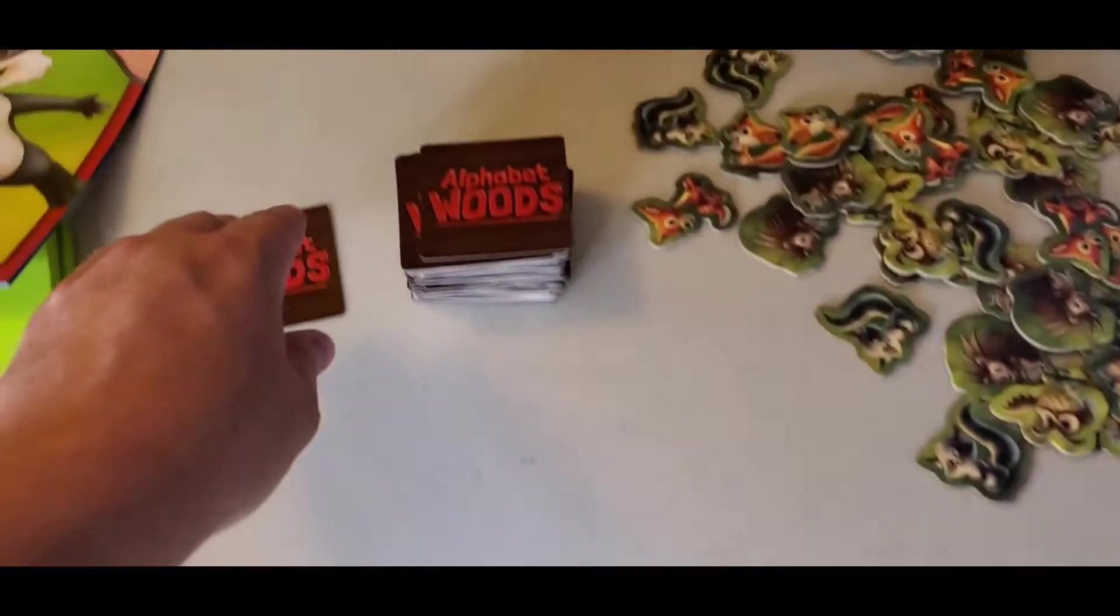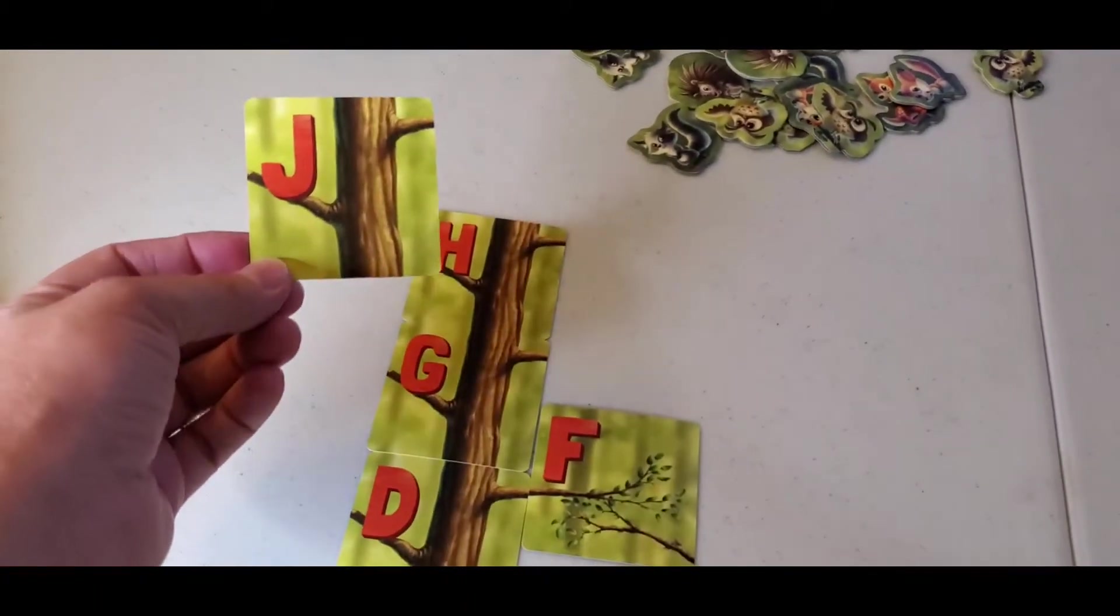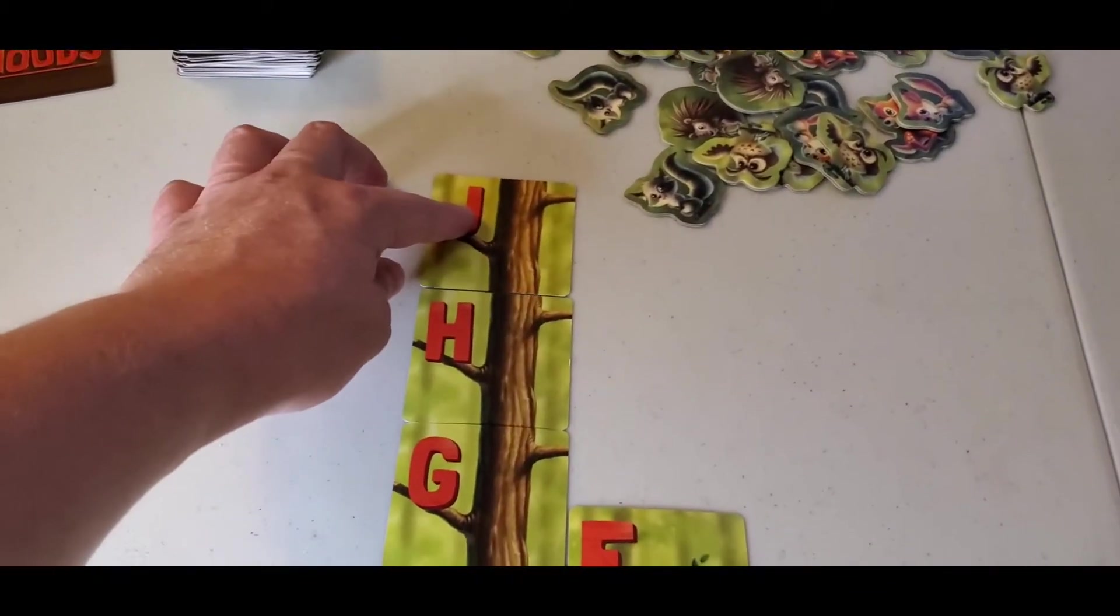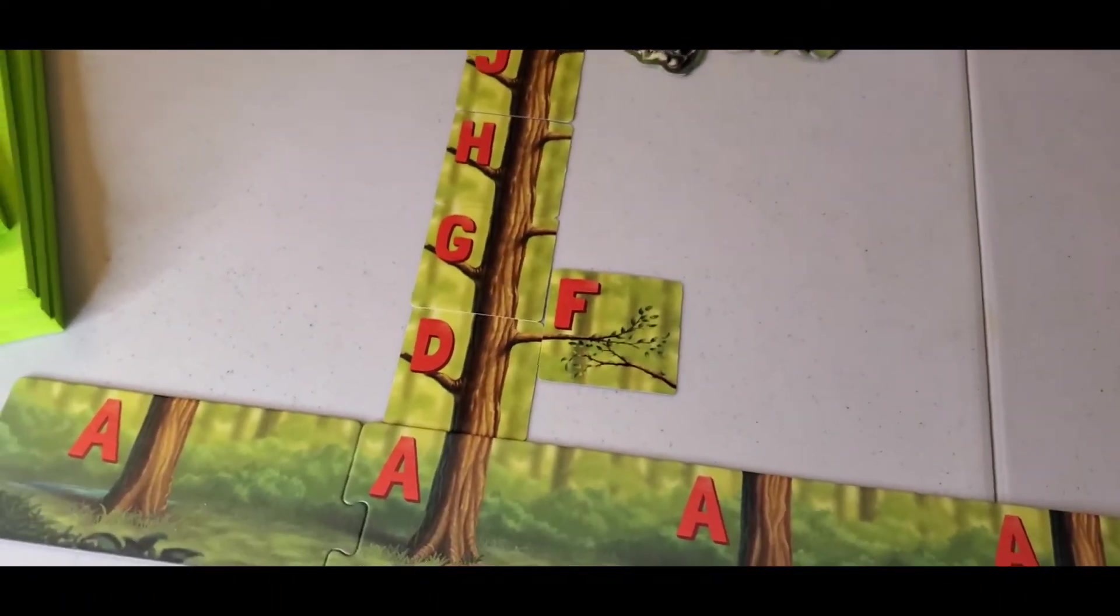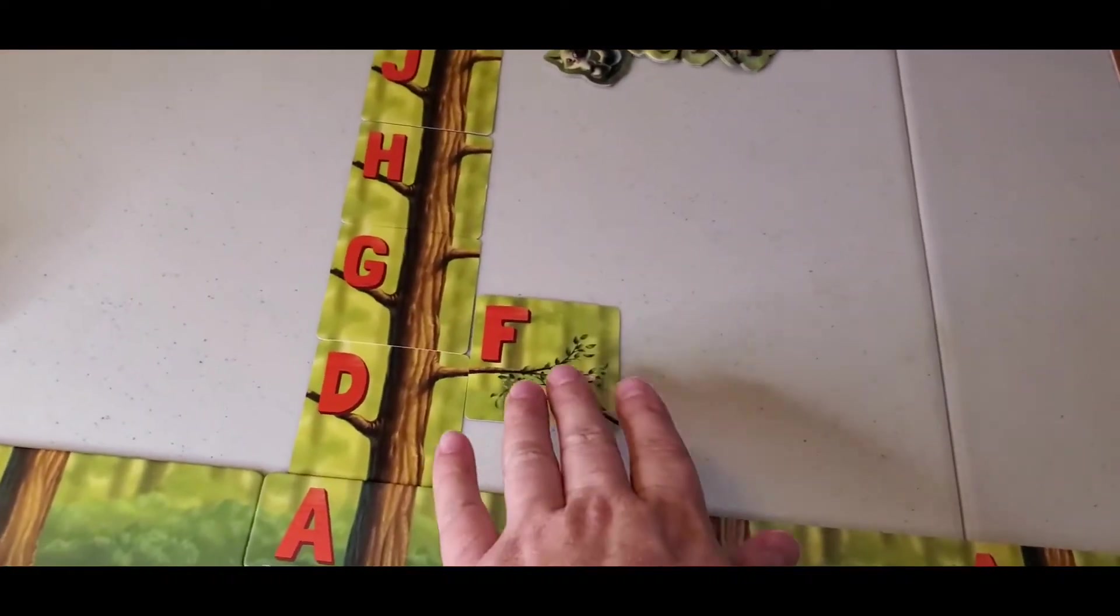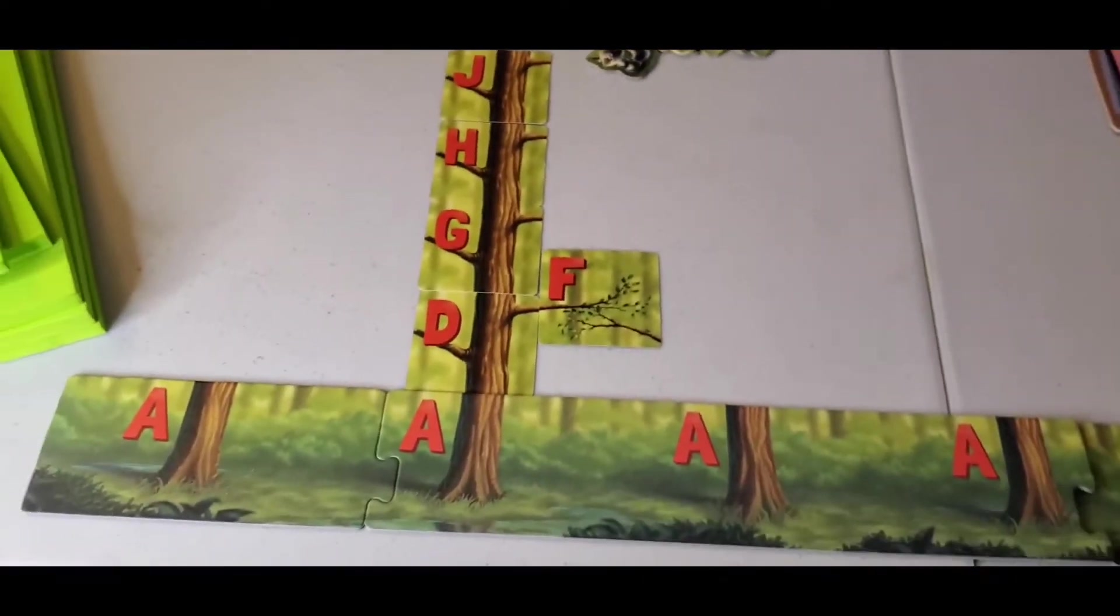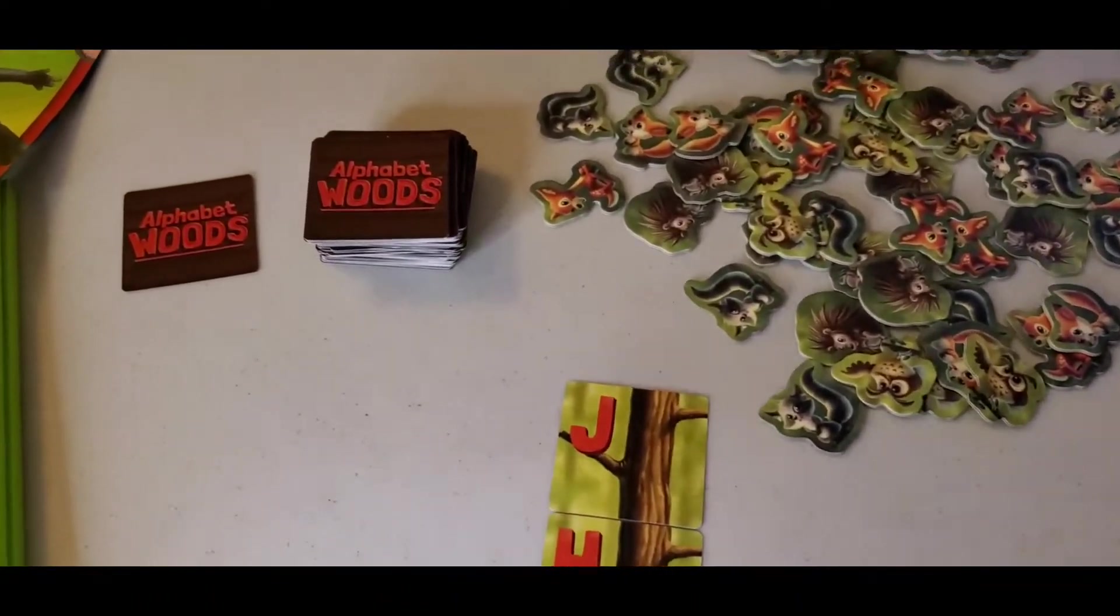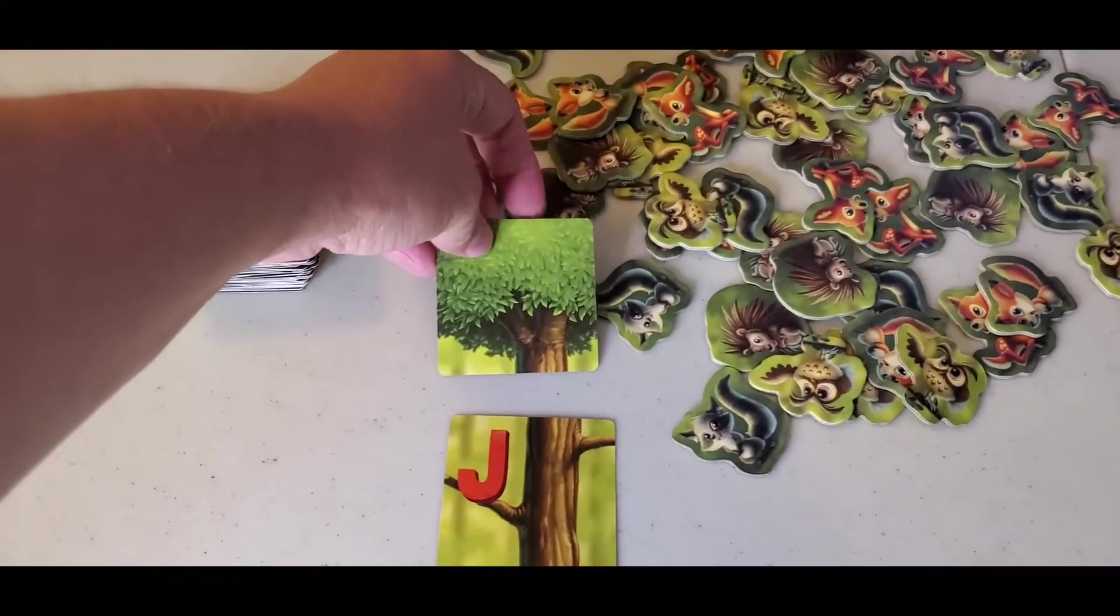So in this game, you're going to turn over a card and see if you can add it to an existing tree, keeping them in sequence. They don't have to be an exact sequence, but as long as they're in alphabetical order, or you can add a branch over to one of the trees.